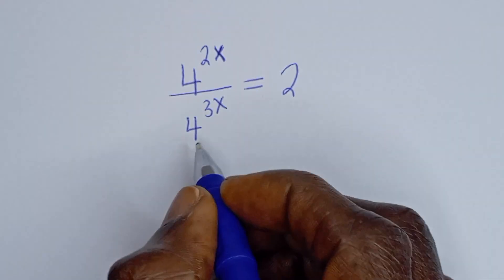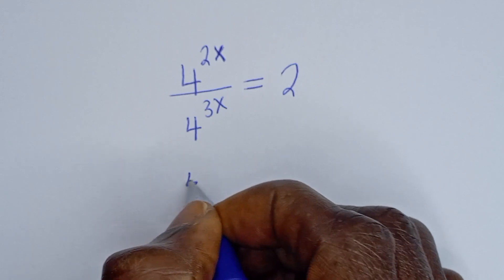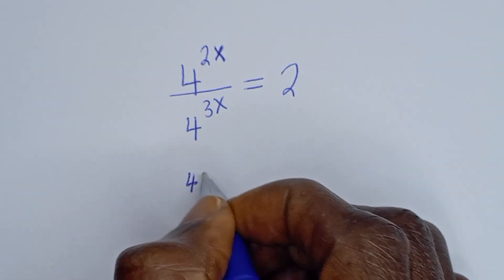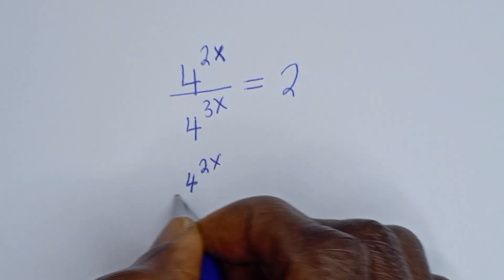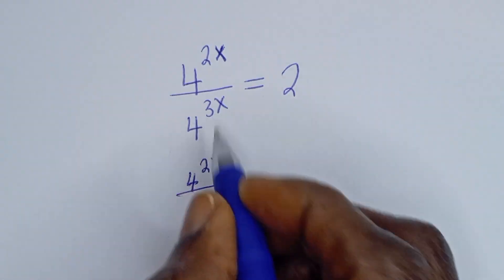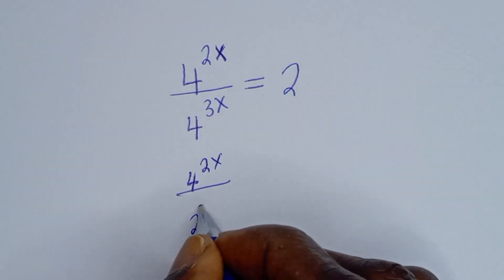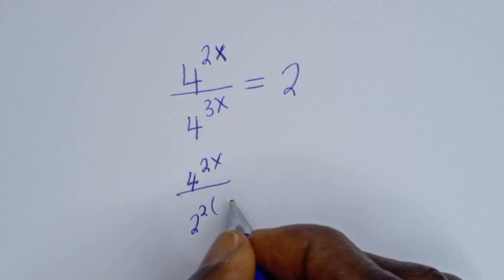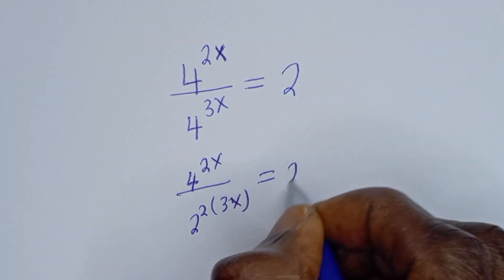This 4 to the power of 2s can be written as 4 to the power of 2x divided by 4 to the power of 3s, which can be written as 2 square brackets 3x, is equal to 2.